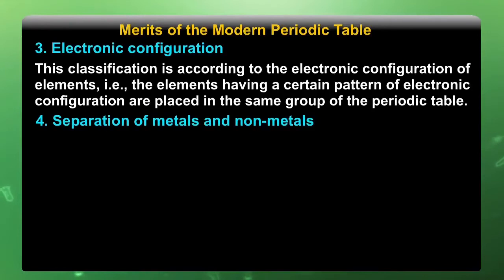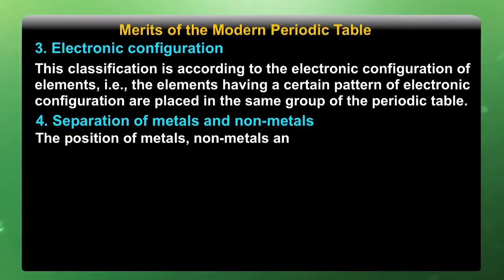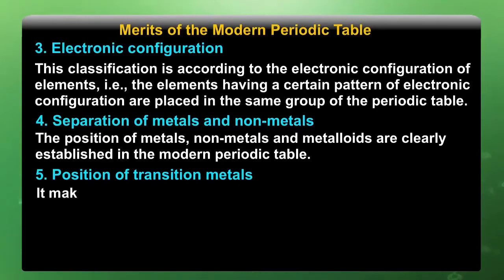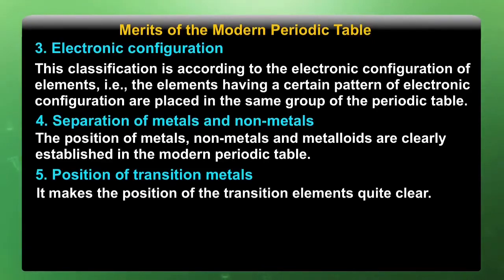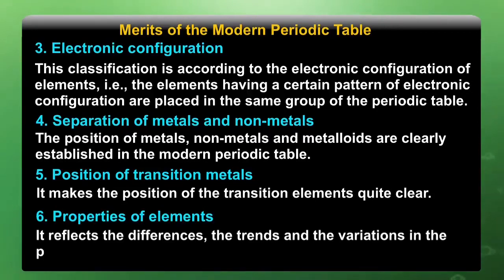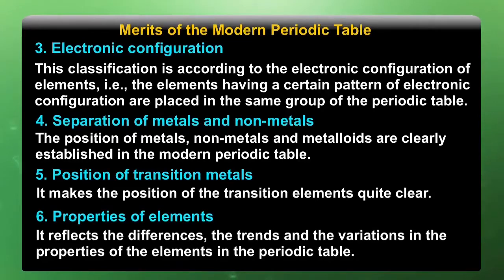Regarding separation of metals and nonmetals: the positions of metals, nonmetals, and metalloids are clearly established in the modern periodic table. Regarding the position of transition metals: it makes the position of the transition elements quite clear. Regarding properties of elements: it reflects the differences, trends, and variation of the properties of elements in the periodic table.